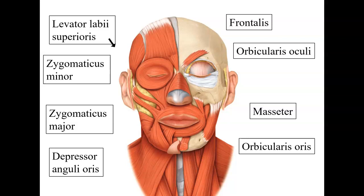Our first muscle is right here, it's called levator labii superioris. Levator means to elevate or lift upwards, labii means lip, and superioris means that it is from above. This particular muscle is going to raise the lip in an upward direction. So levator labii superioris.